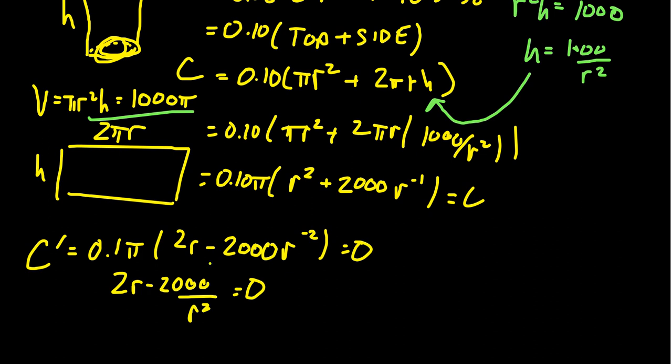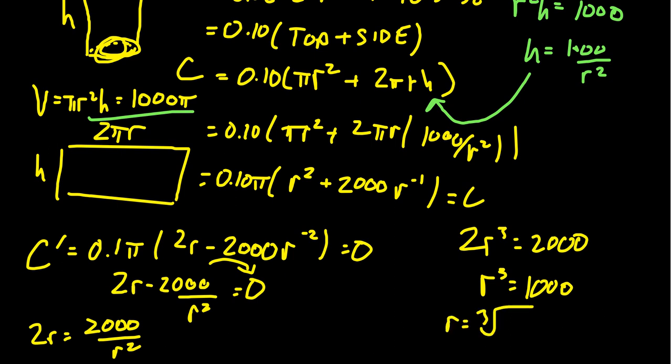Multiplying both sides by r² gives 2r³ = 2000. Dividing by 2: r³ = 1000. Taking the cube root: r = ∛1000 = 10 centimeters.